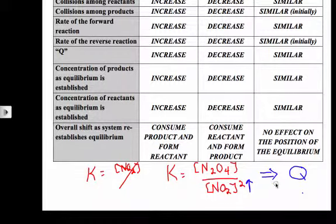that means Q ends up being less, Q ends up being less than K. So, if Q is less than K, we have a driving force to form product.